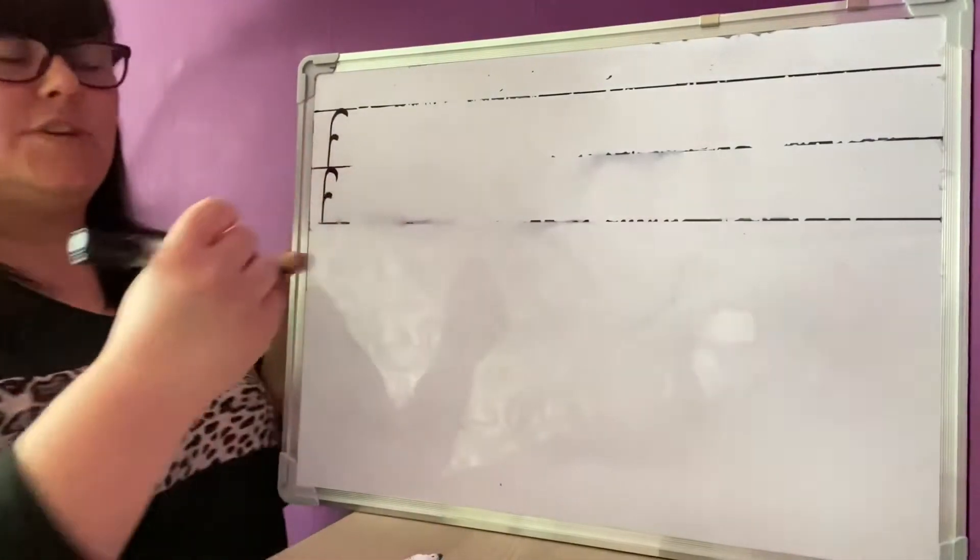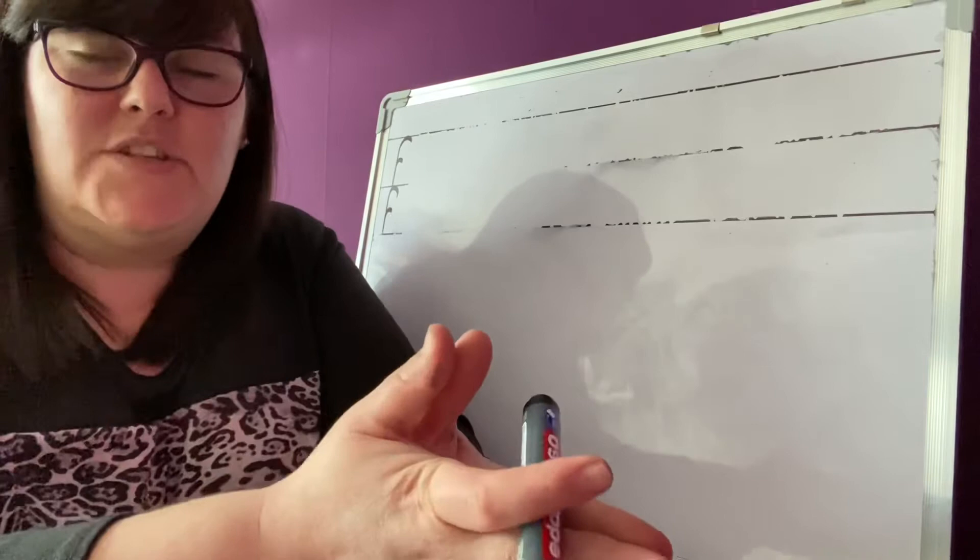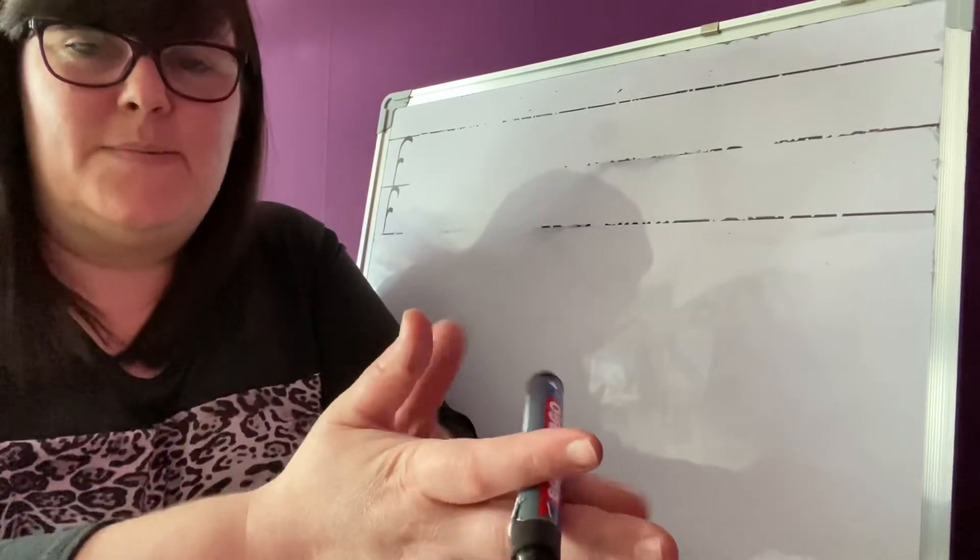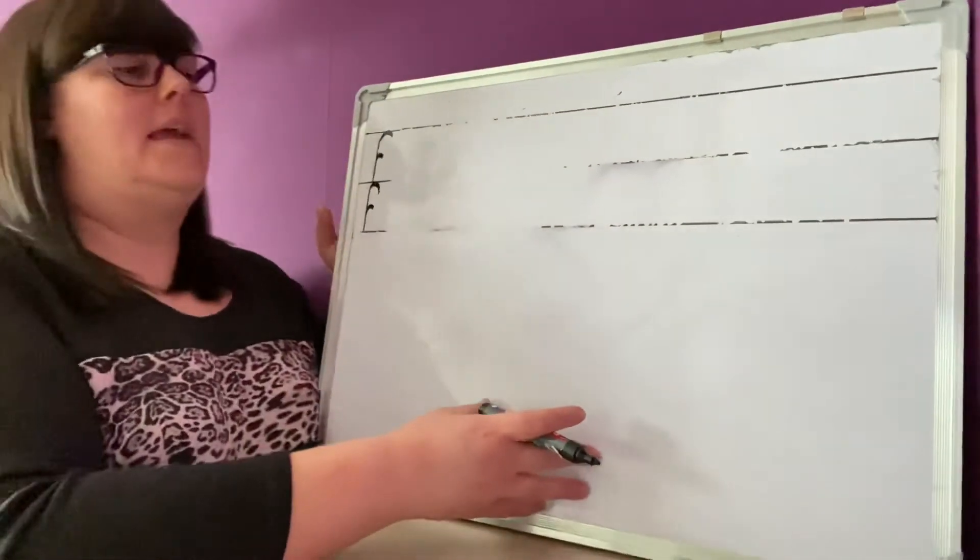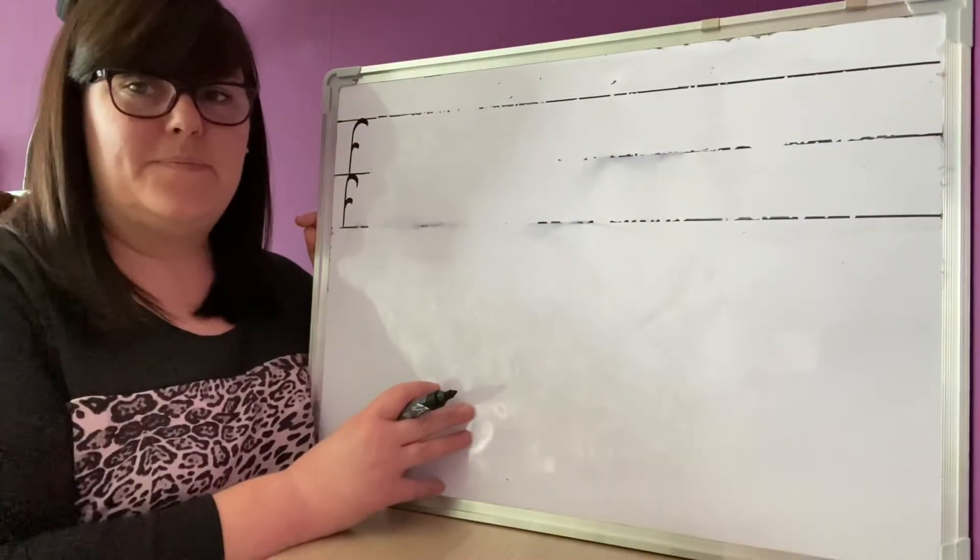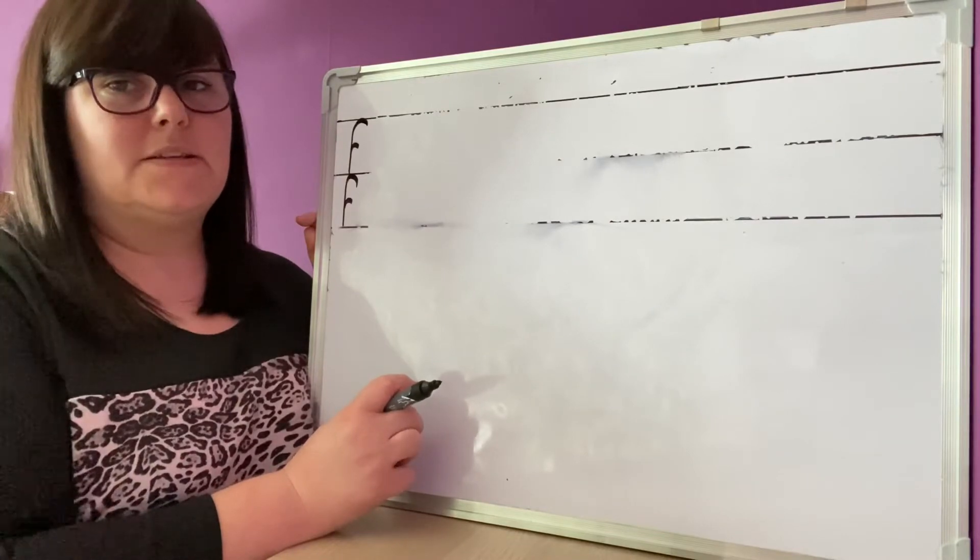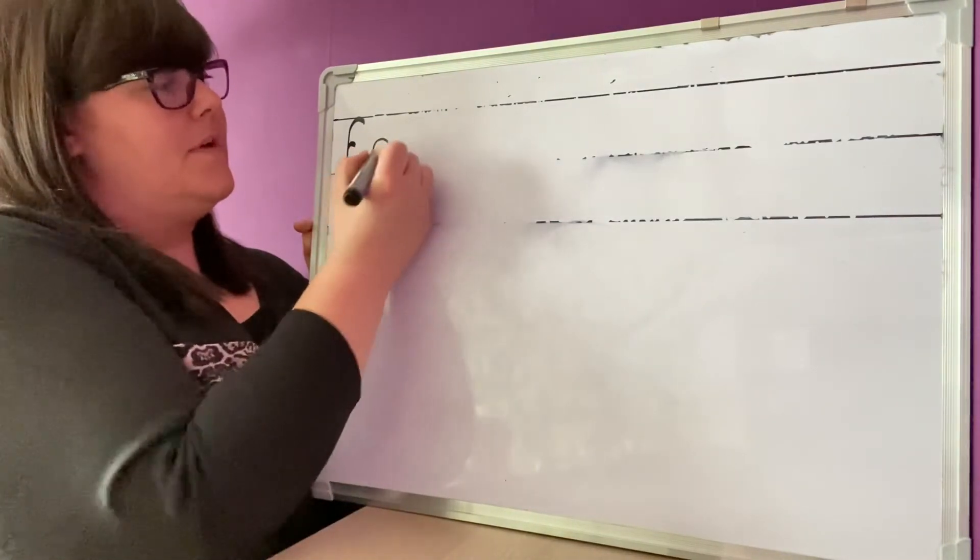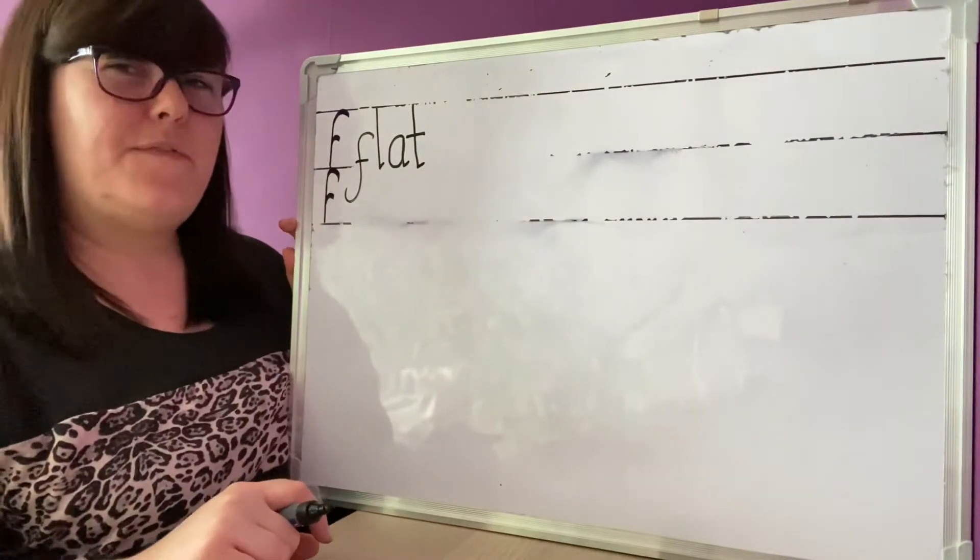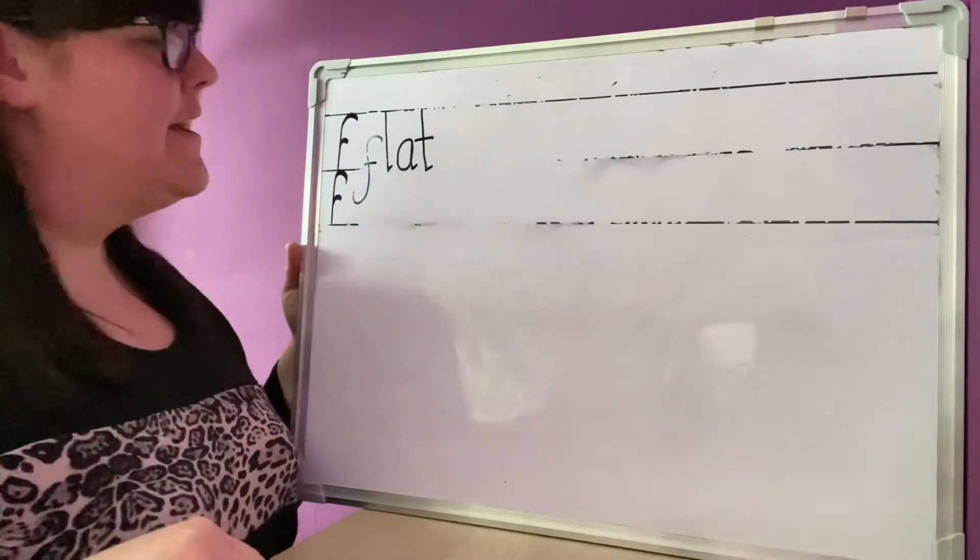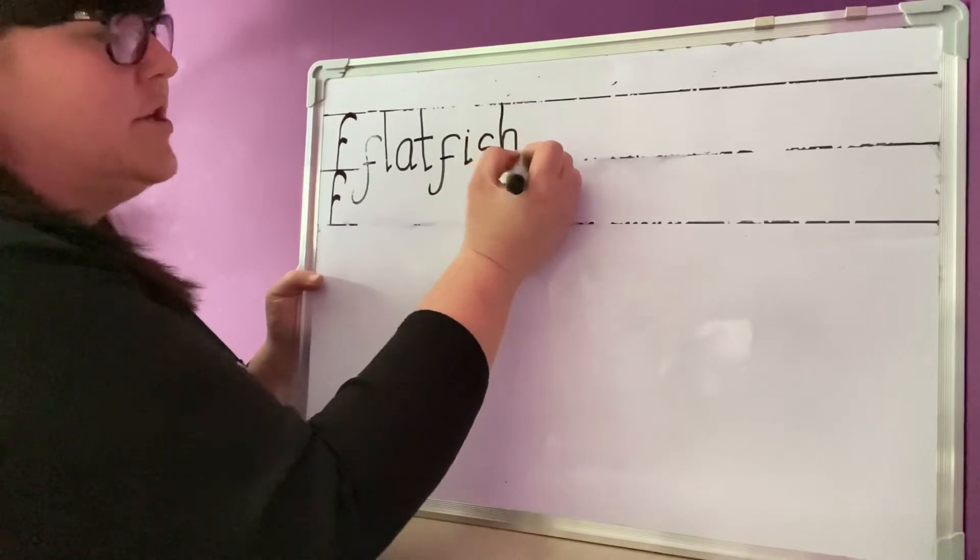Flatfish. Flatfish. So let's clap it. Ready? Flatfish. And again. Flatfish. Brilliant. Okay, so what's the first syllable? Flat. Brilliant. Segment it for me. Flat. Flat. Have you written it down? Flat. F-l-a-t. Flatfish. Fish.